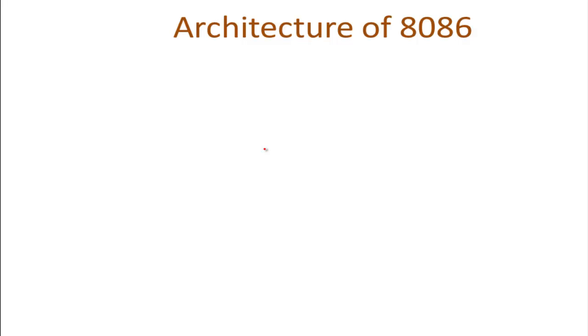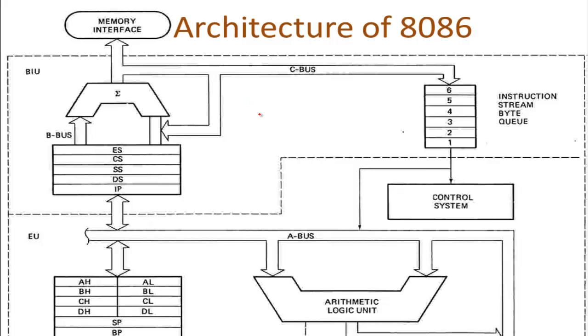Hello friends, this is Niles Devkar. In this tutorial we will see the architecture of 8086. Architecture consists of the whole structure of anything. The main 8086 is divided into two parts: the first one is BIU and the second one is EU. BIU means Bus Interface Unit and EU means Execution Unit.